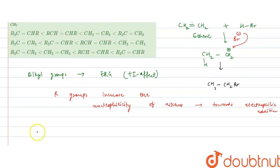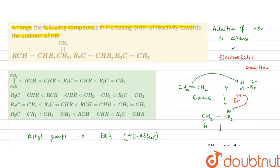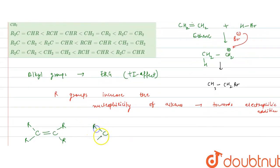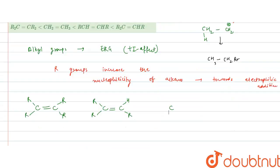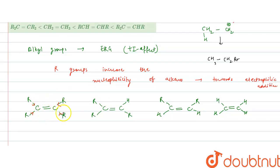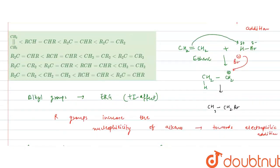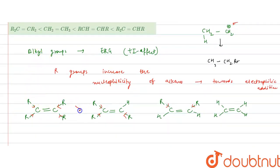The first compound has the maximum number of alkyl (R) groups. After that comes the compound with three alkyl groups, then the one with two alkyl groups (RCH=CHR), and finally ethene with no alkyl groups — only hydrogen atoms. More alkyl groups means greater electron-releasing effect, greater nucleophilicity.